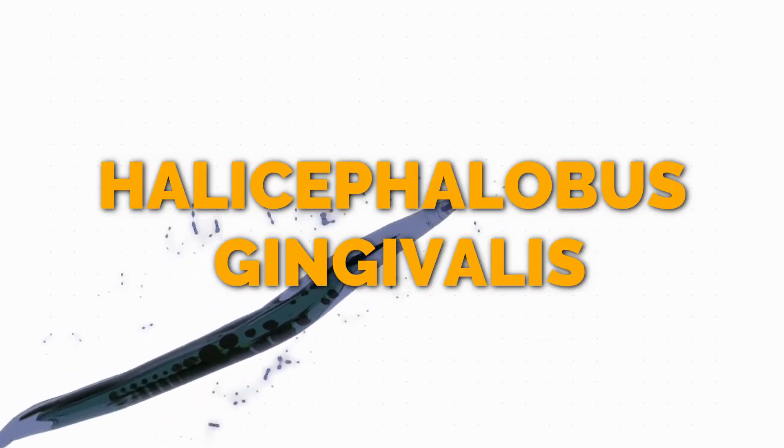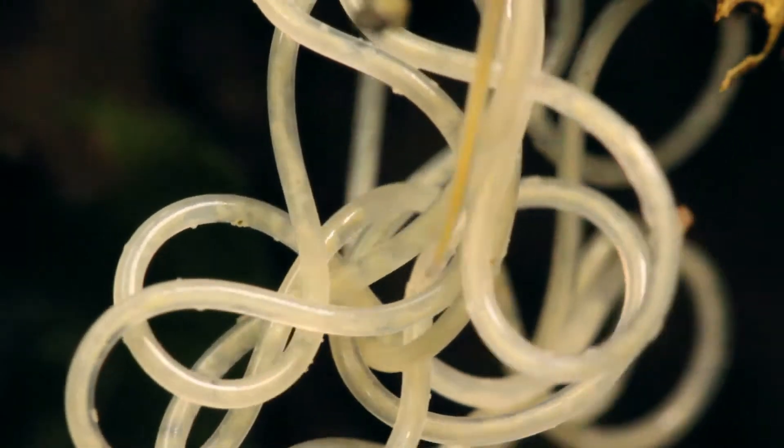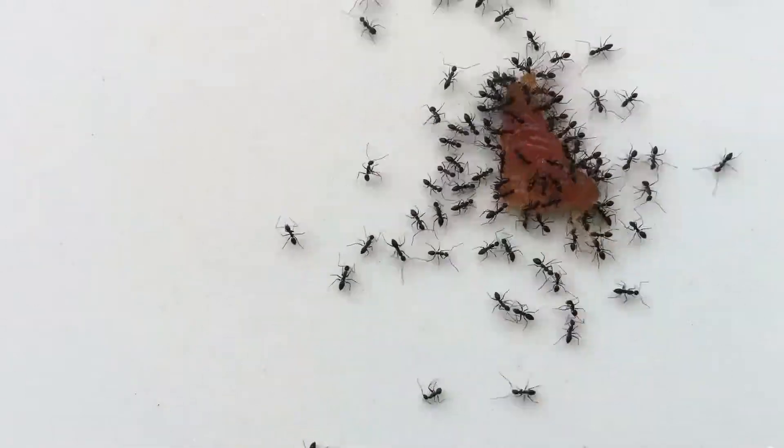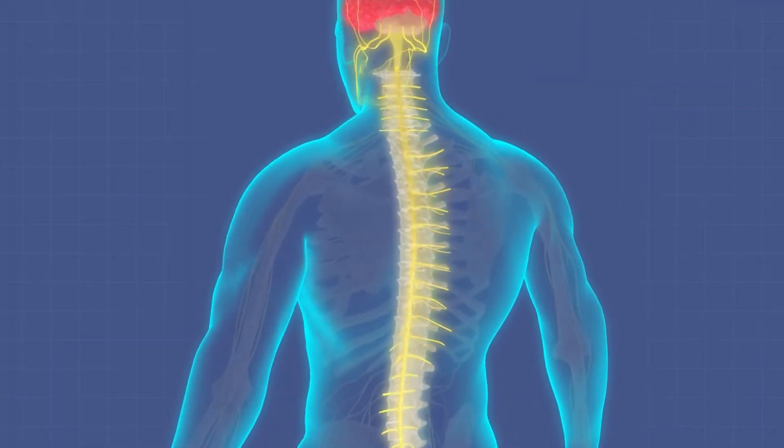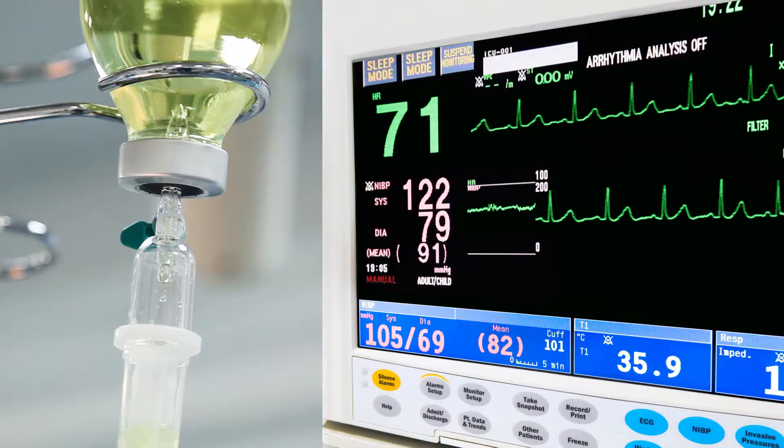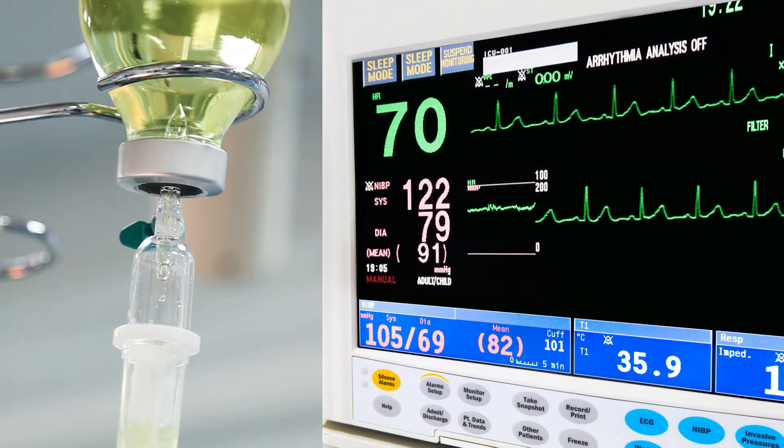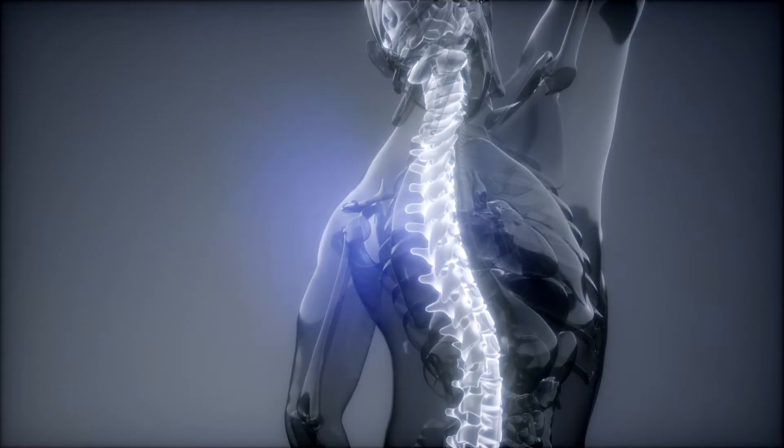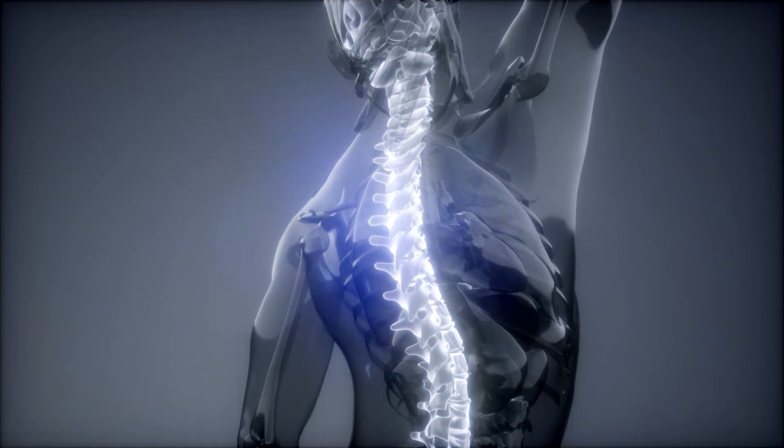Halicephalobus gingivalis. Halicephalobus gingivalis is a nematode transmitted through contaminated food and skin. It heads towards the central nervous system and then to the blood-brain barrier. It affects people suffering from cancer or HIV-AIDS, causing inflammation to their brain, spinal cord, and membranes, leading them to death.